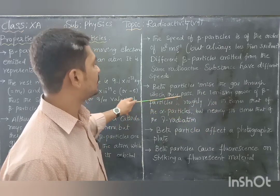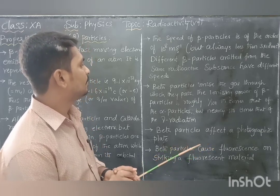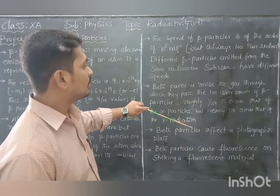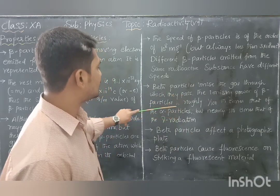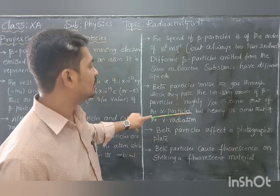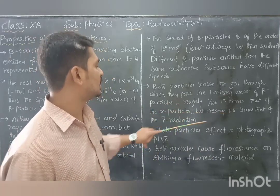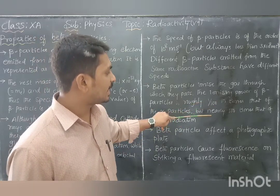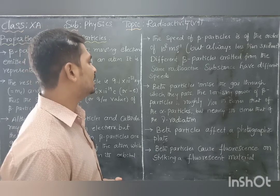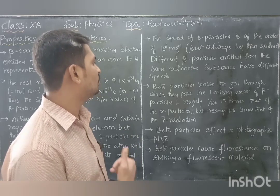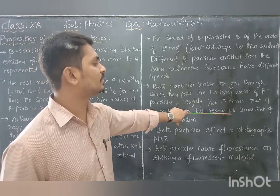Beta particles ionize the gas through which they pass — they split up into ions as the beta particle goes through the gas. Comparing ionizing power: the ionizing power of beta particles is roughly 1/100 times that of the alpha particle, but nearly 100 times that of gamma radiation. So beta particle ionizing power is less than alpha but more than gamma.